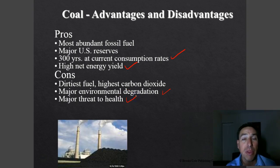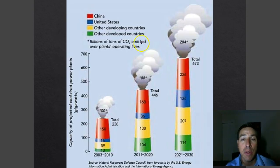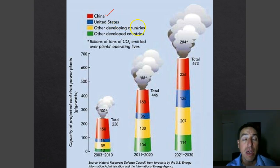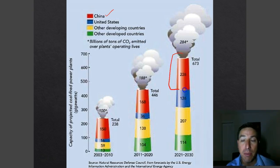Coal is also a direct cause of most acid rain in the world. When it comes to who has the coal, both the US and China have large deposits. China uses coal in many of their power plants, which is one reason why China has a lot of air pollution. China has a very large gigawatt capacity when it comes to coal-fired power plants, and the US is second.